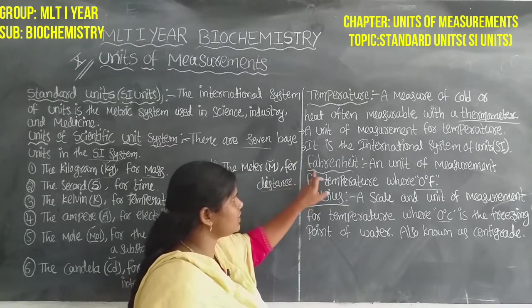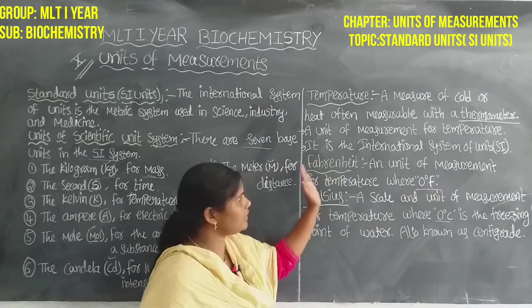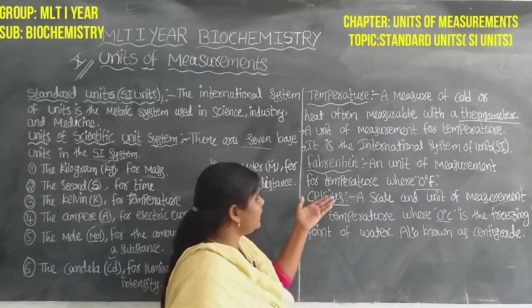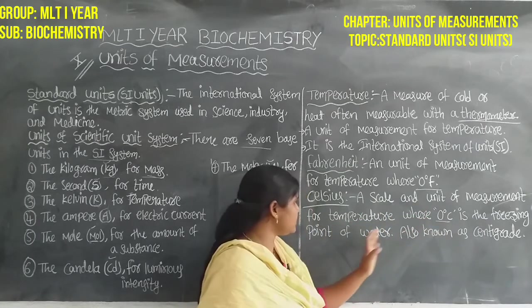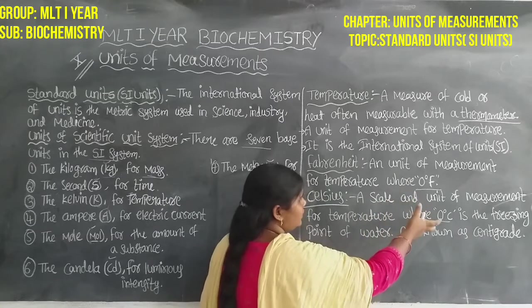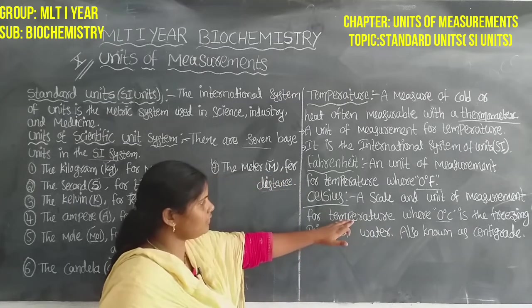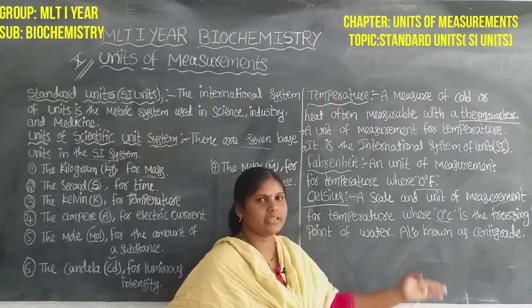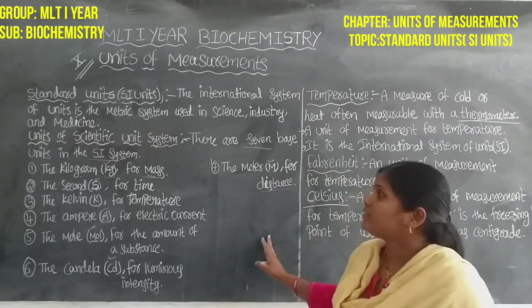Then next is Fahrenheit — a unit of measurement for temperature where 0 degree centigrade equals Fahrenheit. Then Celsius — a scale and unit of measurement for temperature where 0 degree Celsius is the freezing point of water, also known as centigrade. This is the units of measurement.